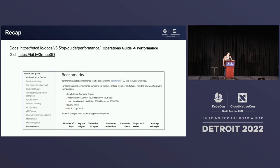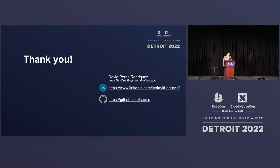To do a quick recap — if you want to know more about benchmarking etcd, especially on-prem, you can see the operations guide in the documentation and the performance section. There's also a gist with some scripts you can use to create your own three-member etcd cluster, and it will give you commands to run benchmarks if you want to test further. That's my information — thank you very much, I appreciate it.